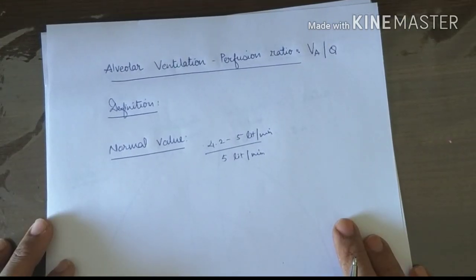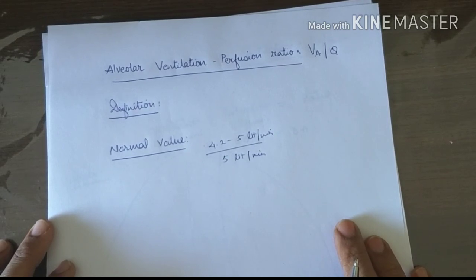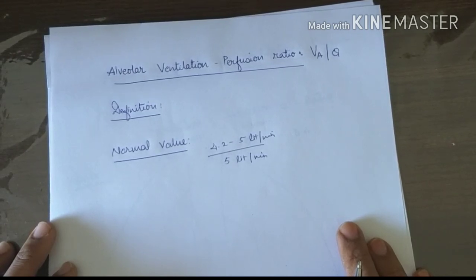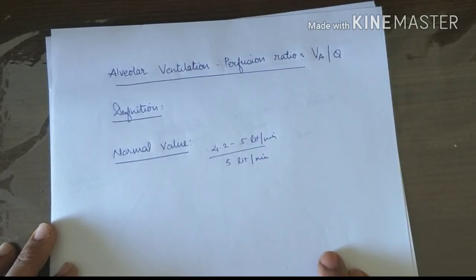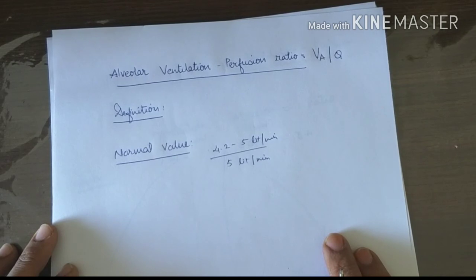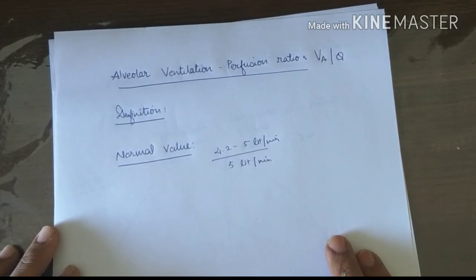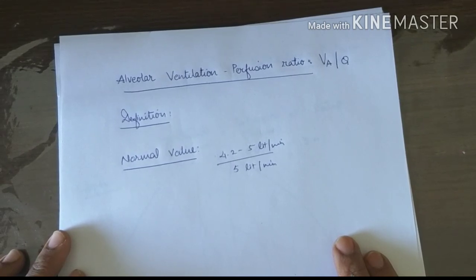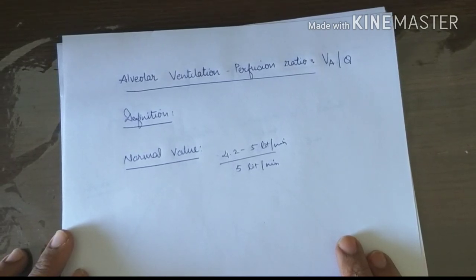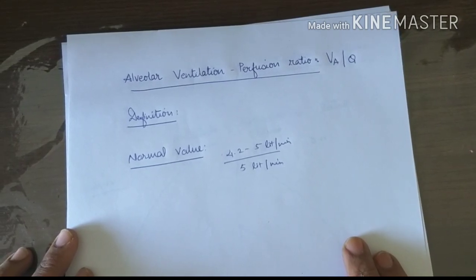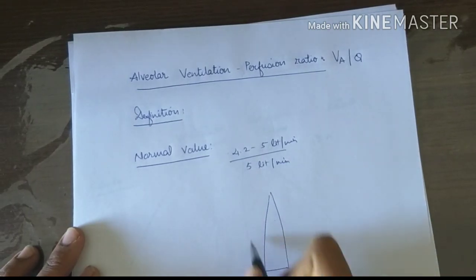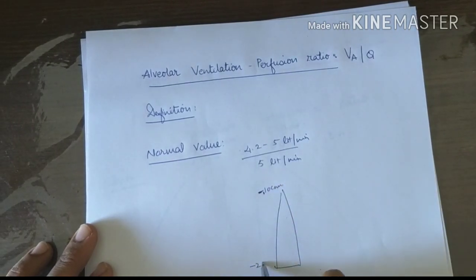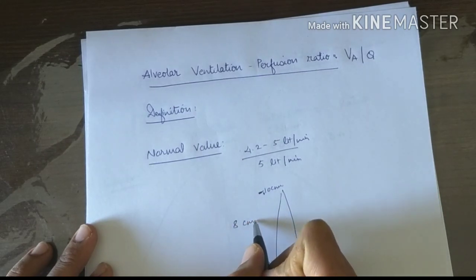First, the effect of gravity on alveolar ventilation. Alveolar ventilation is more or less evenly distributed in the supine position because the hydrostatic effect on intrapleural pressure is reduced. But when standing, in the vertical lung, alveolar ventilation is unevenly distributed due to gravity. Intra-alveolar pressure is 0 throughout the lungs in static condition, but intrapleural pressure shows a gradient of about 8 centimeters of water — minus 10 cm H₂O at the apex and minus 2 cm H₂O at the base.